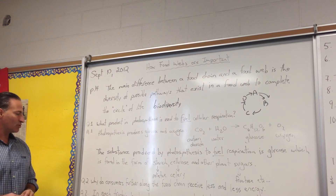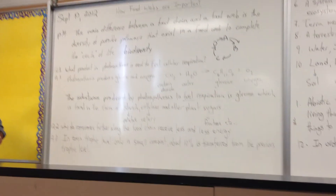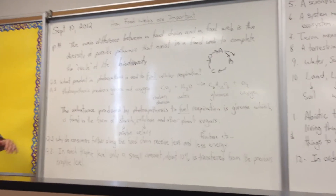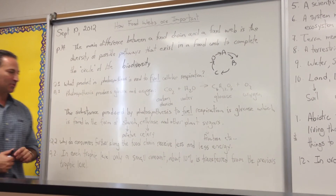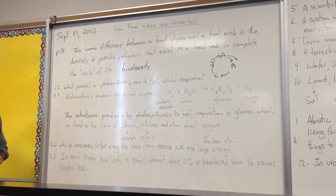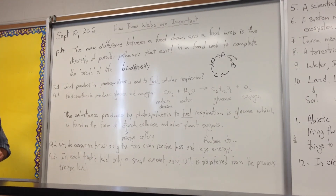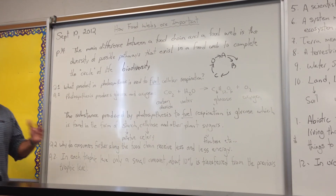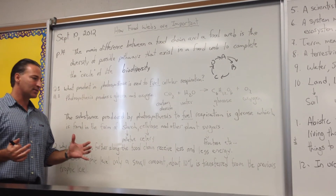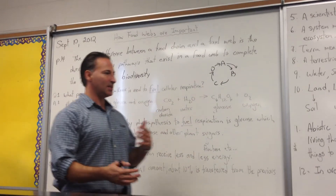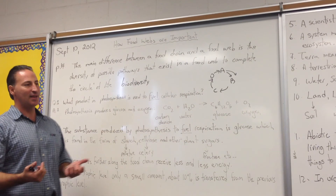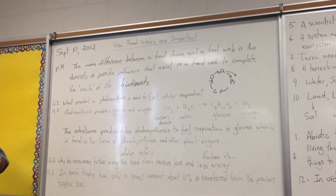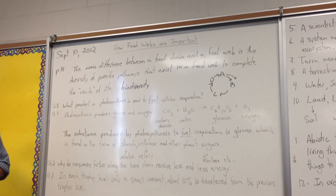The second question was: why do consumers further along the food chain receive less and less energy? The answer is that at each trophic level, only a small amount of the energy — about 10% — is transferred from the previous trophic level. So out of 100 pounds of grass, you'll get about 10 pounds of grasshopper, and out of 10 pounds of grasshopper, you'll get maybe 1 pound of frog.